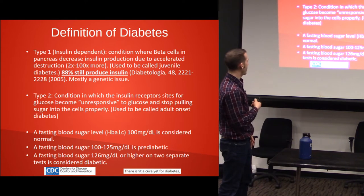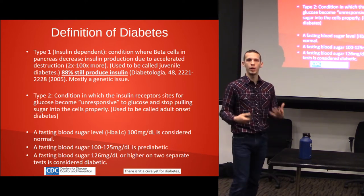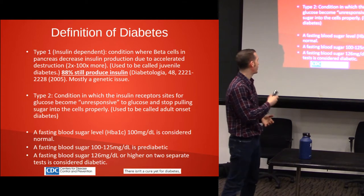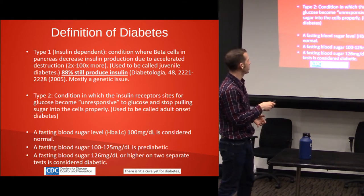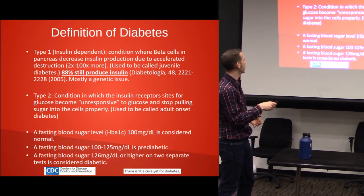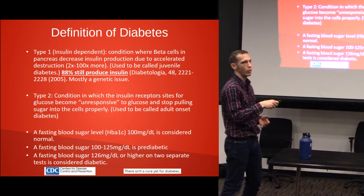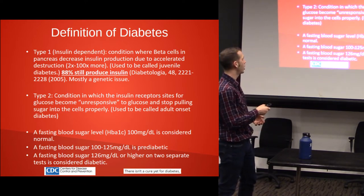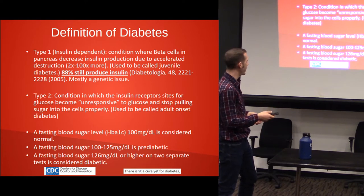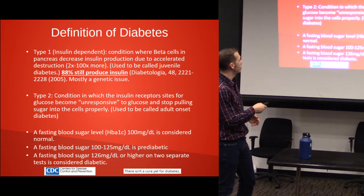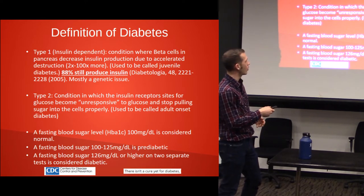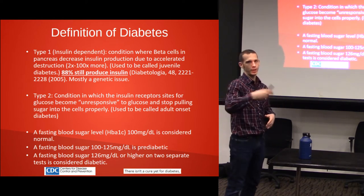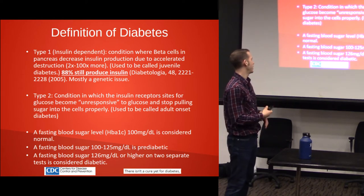This is how diabetes is measured: fasting blood sugar and HbA1c. Fasting blood sugar levels of 100 mg/dL is considered normal. Fasting blood sugar of 100–125 is pre-diabetic. A fasting blood sugar of 126 or higher on two separate tests is considered diabetic.